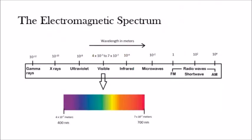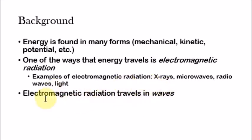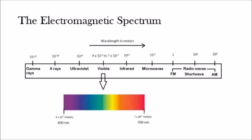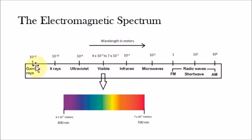So how does all this stuff about waves relate to electromagnetic radiation? We said electromagnetic radiation travels in waves — and now you know everything about waves. The wavelength of a wave determines the type of electromagnetic radiation. This is called the electromagnetic spectrum. There are different types: gamma rays, x-rays, ultraviolet, visible light, infrared, microwaves, and radio waves — which include FM, short, and AM waves. How they vary from each other is simply their wavelengths. Gamma rays and x-rays have very short wavelengths — 10 to the minus 12 to 10 to the minus 10 meters — while radio waves have very long wavelengths, like 10 to the second or 10 to the fourth meters.